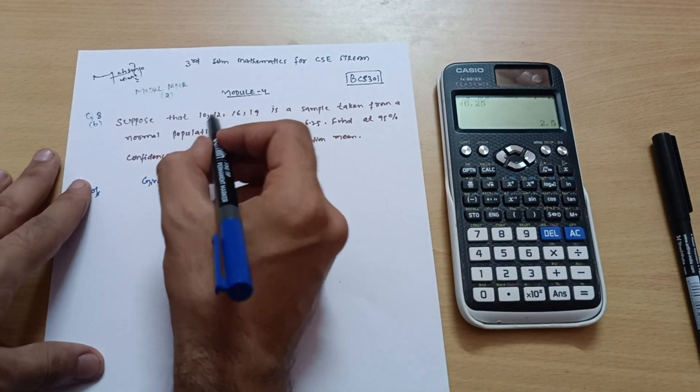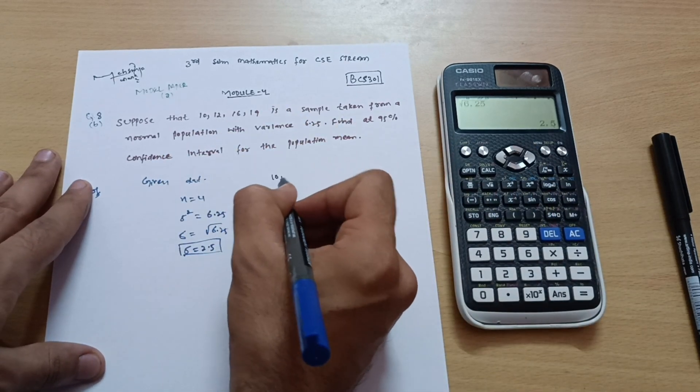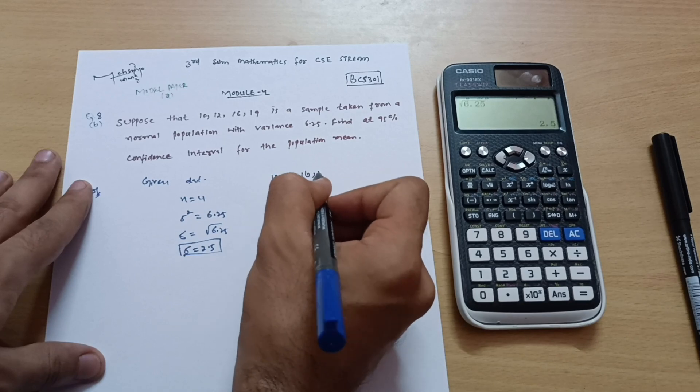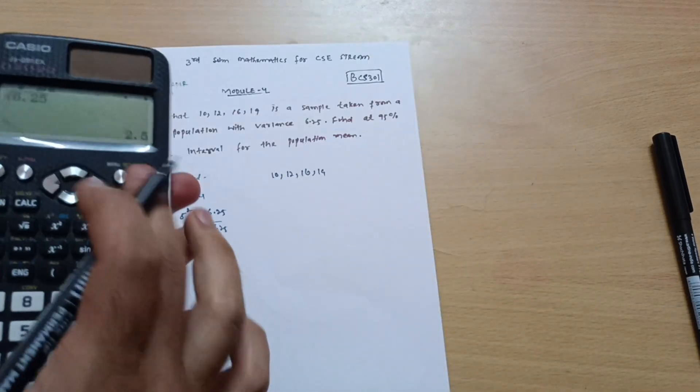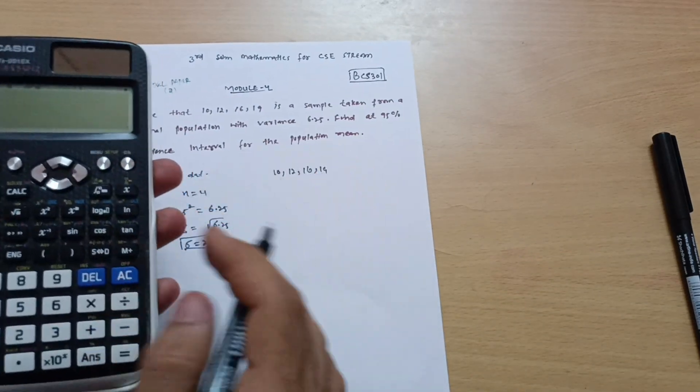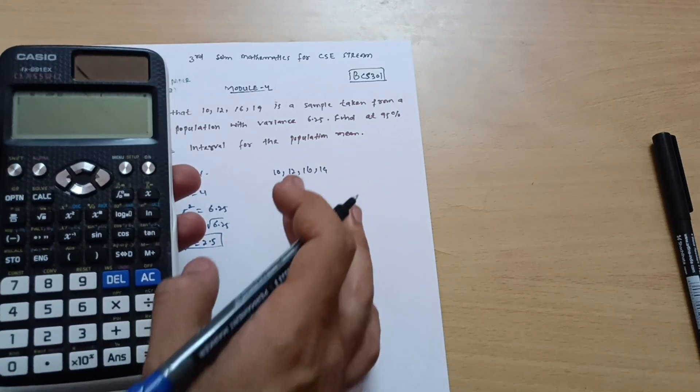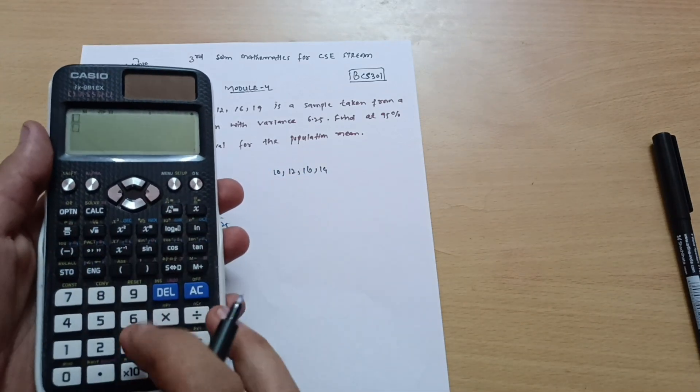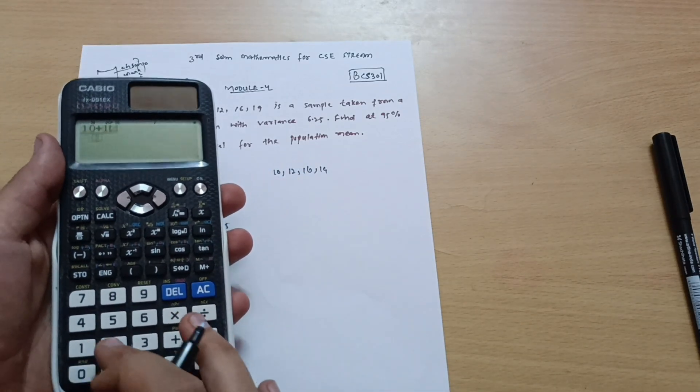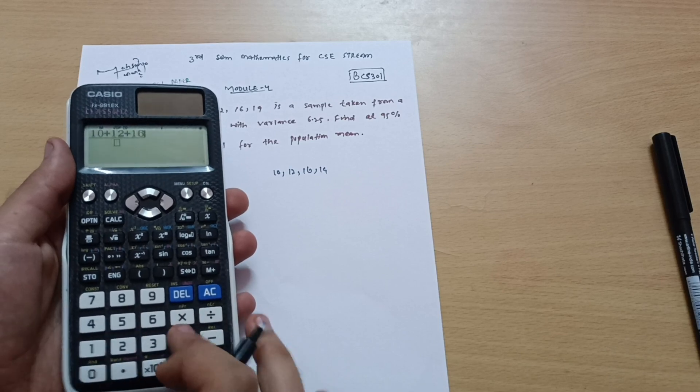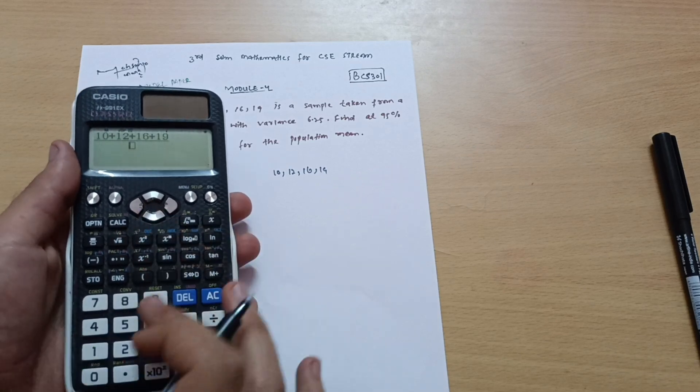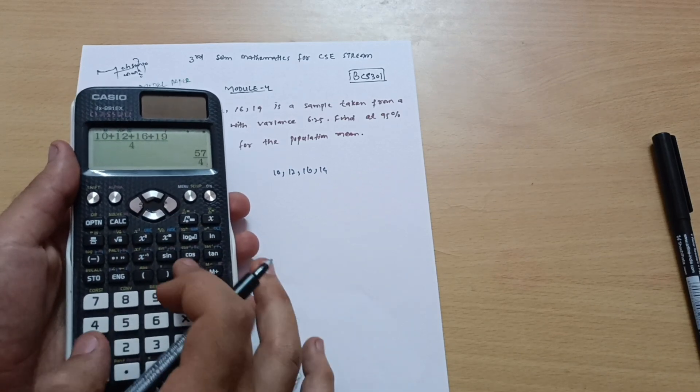And mean is not given in the particular question, so how can I calculate? See here, 10, 12, 16, 19, these are the samples given. So mean is equal to sum of observations divided by total number of observations. So I can write here as 10 plus 12 plus 16 plus 19 divided by total number of observations, which is 4.